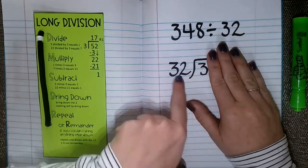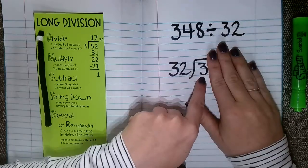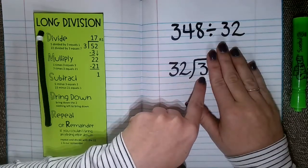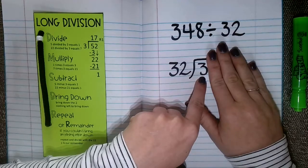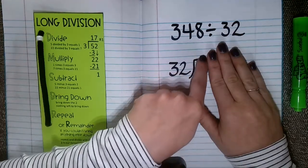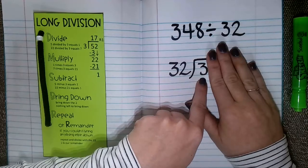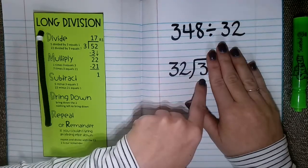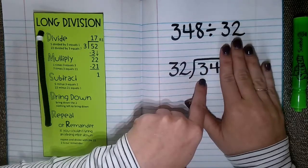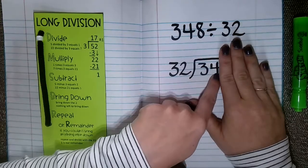No, 32 cannot go into 3, because 3 is smaller than 32. So since that did not work, I know that I am not going to have a number above this 3 here. If it helps you to write a 0, that is totally fine. So I'm going to move to my next largest place value. So I'm going to move to the right.